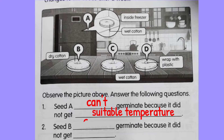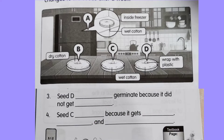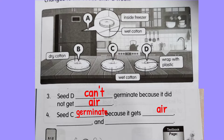How about seed B? The cotton is dry, so seed B cannot germinate because it did not get water. How about seed D — wrapped with plastic? Seed D cannot germinate because it is wrapped in plastic, so the seed did not get air.